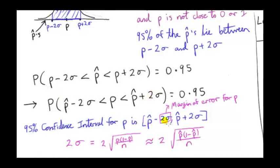So now we found a 95% confidence interval for P. It comes from these two terms here. The probability is 0.95 that the unknown population proportion P lies between P hat minus 2σ and P hat plus 2σ.